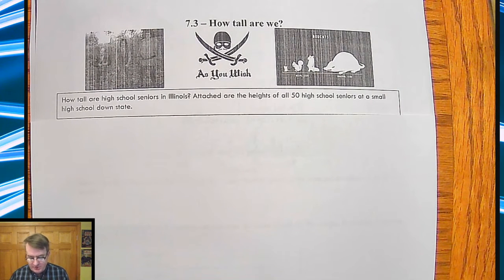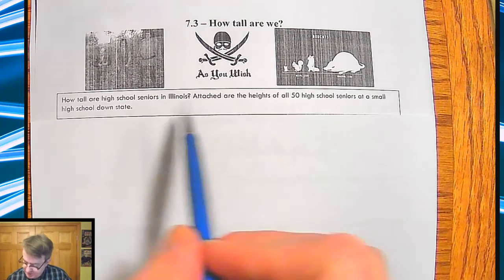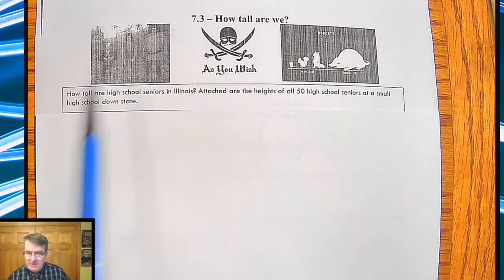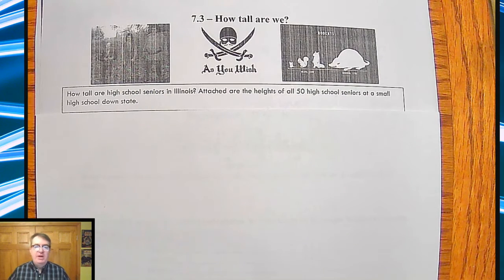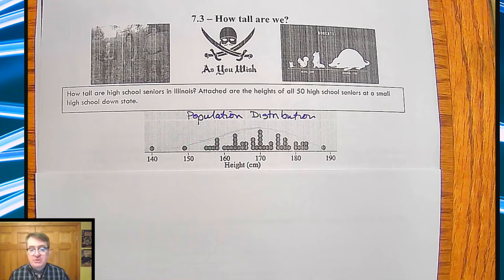We're going to be talking about how sampling, how means of sampling distributions work. So the setup here, and if you could see this, this would be, because my printer ran out of toner, is all from the Princess Bride because you can see how different heights are. We're talking about a small high school downstate Illinois. We're supposing that there's 50 seniors there. And this is their distribution. So this is the population distribution because we're talking about all 50 seniors.